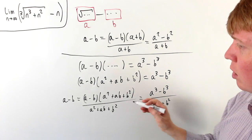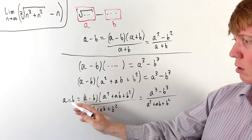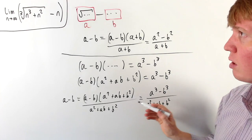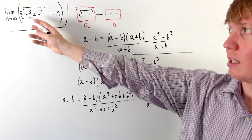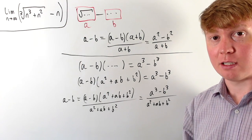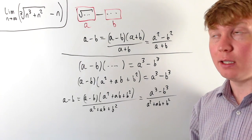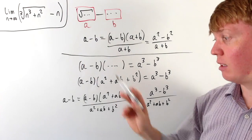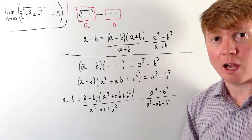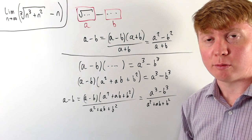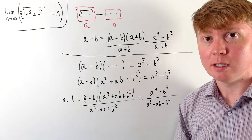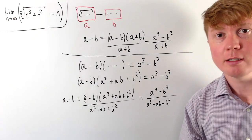We can use this fact to say that a minus b equals (a minus b)(a squared plus ab plus b squared) divided by (a squared plus ab plus b squared), which equals (a cubed minus b cubed) divided by (a squared plus ab plus b squared). Now we apply this to our limit: our a is the cube root of (n cubed plus n squared), and our b is just n. We can use this to rewrite the limit in a different format where it will be easier to evaluate.